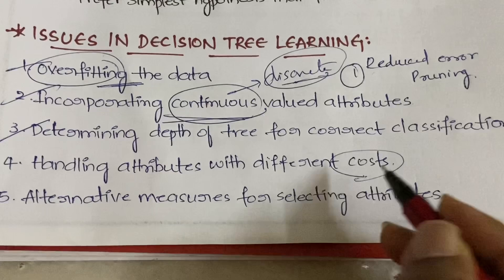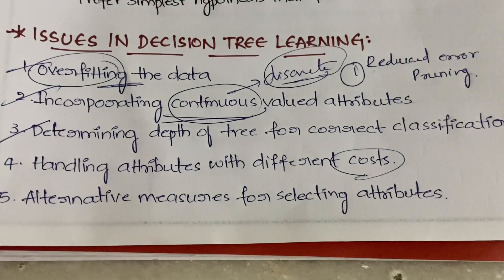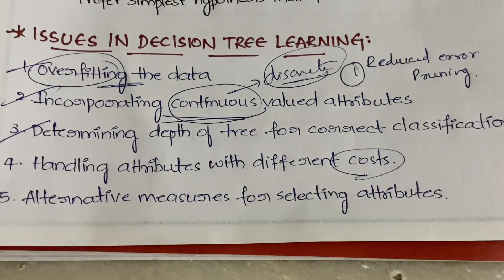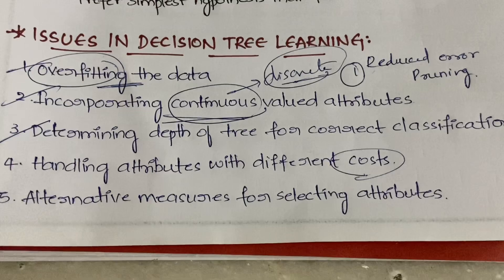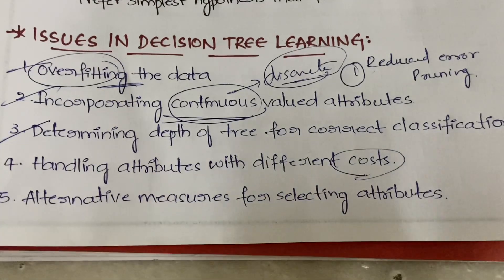The fourth issue is handling attributes with different costs, meaning different importance or weightage. If you give more priority to an attribute that doesn't influence the data much and doesn't cover a variety of examples, and less importance to one that covers more examples, then the resulting decision tree will not support many examples.